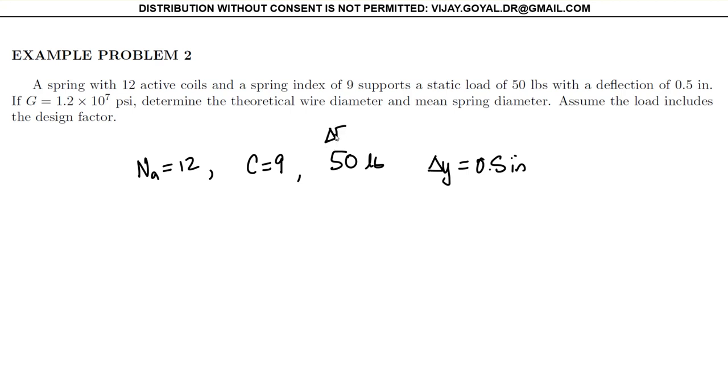What we're going to assume is this is your delta F, so this is after the preload is applied. Your G is given in the problem. It says 1.2 times 10 to the 7.